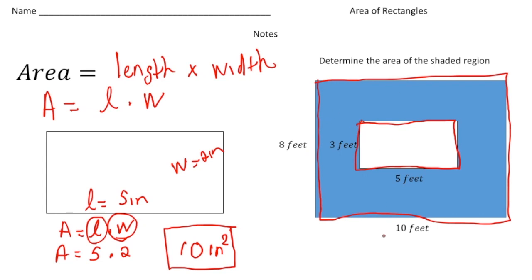Alright, so if you notice the length and width of the big is 8 by, sorry, 10, right? So 8 times 10 is 80. So the area of the large rectangle is 80 square feet.